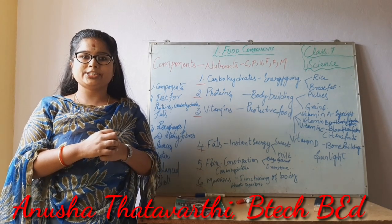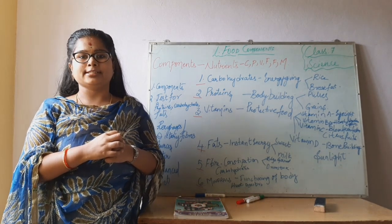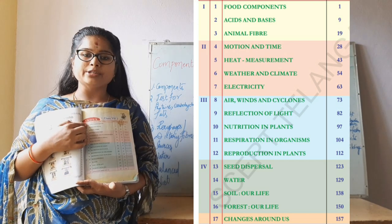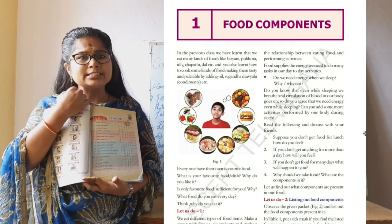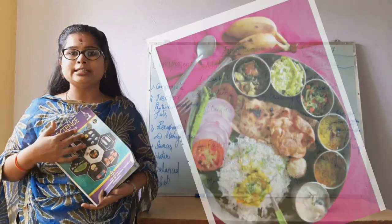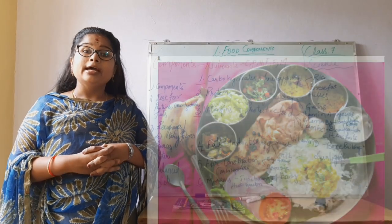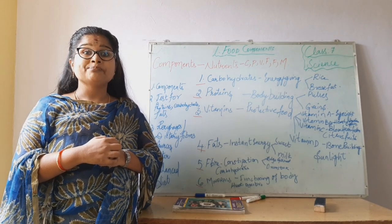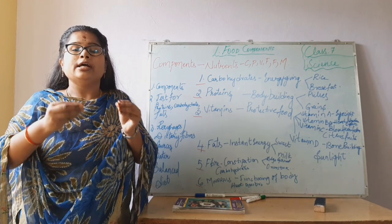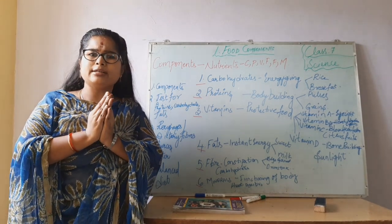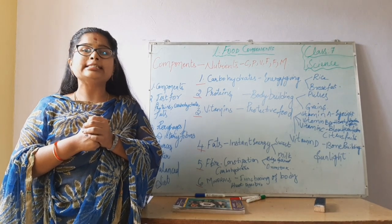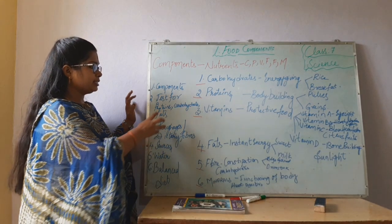Hi children, this is Anusha, your science teacher, here to teach class 7 science. This is our textbook and we have a total of 17 lessons. We are going to deal with the first lesson today. Our first lesson is all about food components. Food is very important in our daily life. In previous classes you have learned about types of food, how to cook food, and what ingredients are used.